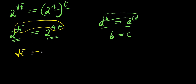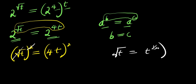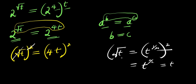We get root t equals 4t. To eliminate the square root, we raise each side to the power of 2. The square root of t is t to the power of 1/2, and raising it to the power of 2 gives t^(1/2 × 2) = t^(2/2) = t. So the left side becomes t.